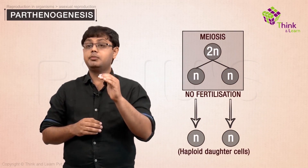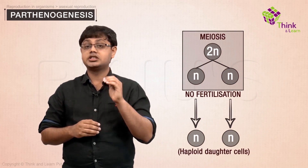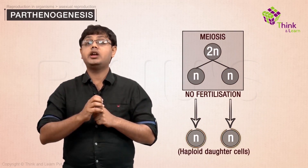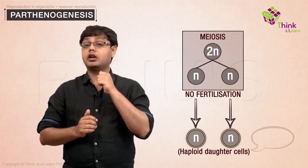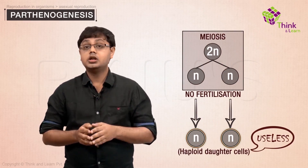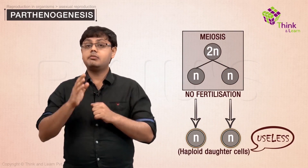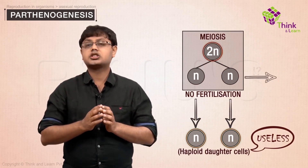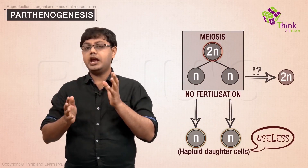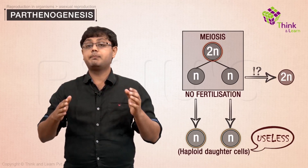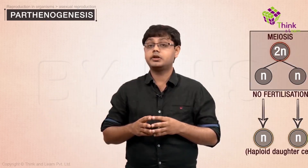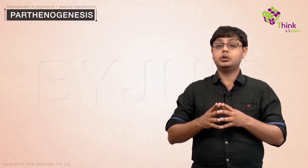The root problem of parthenogenesis in vertebrates is that haploid eggs are useless. The egg cell must either remain diploid or somehow be able to become diploid again by itself. This is achieved in several ways.